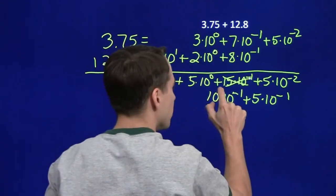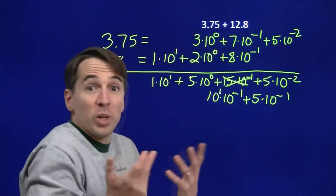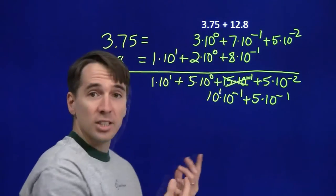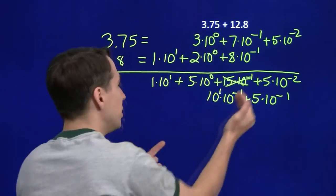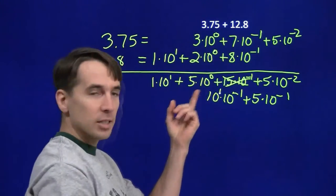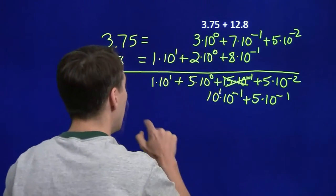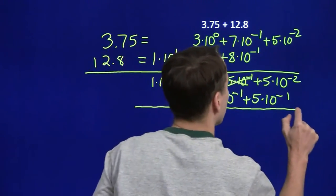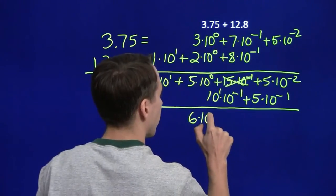Now 10 tenths, 10 to the first times 10 to the minus 1 is 10 to the 0. 10 to the 0, that gives me another one in the units place. So I have 5 times 10 to the 0 plus another 10 to the 0. That's going to give me 6 times 10 to the 0.